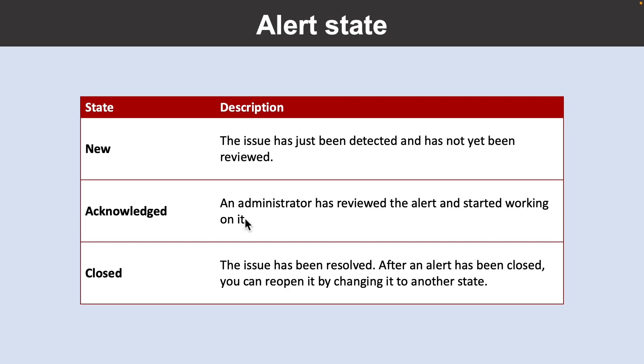Alert state is different and independent of the monitor condition. Alert state is set by the user, while monitor condition is set by the system. When an alert fires, the alert's monitor condition is set to fired. When the underlying condition that caused the alert to fire clears, the monitor condition is set to resolved. The alert state isn't changed until the user changes it.